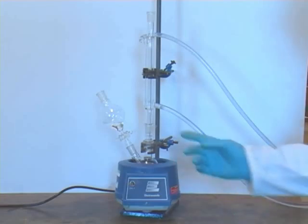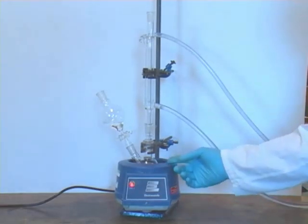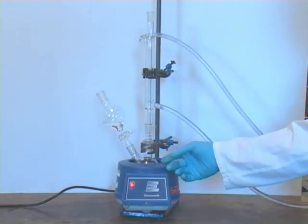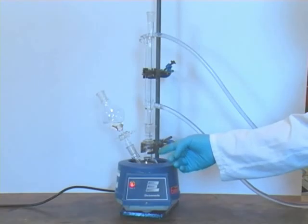Here we have a heating mantle at the bottom. Alternatives include heating with a Bunsen burner, a steam bath, or either an oil bath or a heating block on a hot plate.